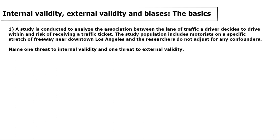So in this case, a study is conducted to analyze the association between the lane of traffic that a driver decides to use and the risk of receiving a traffic ticket. The study population includes motorists on a specific stretch of freeway near downtown Los Angeles, and the researchers do not adjust for any confounders. And we're asked to name one threat to internal validity and one threat to external validity.